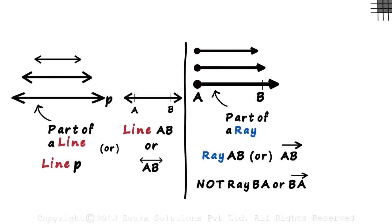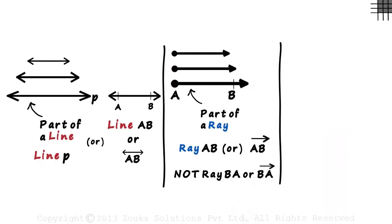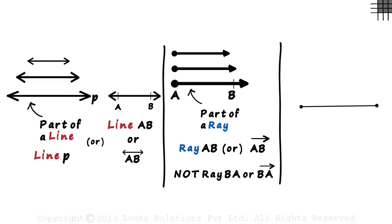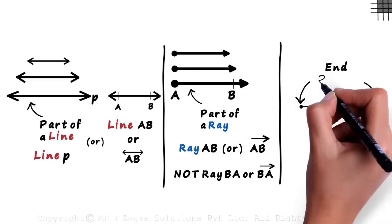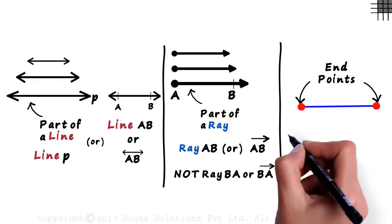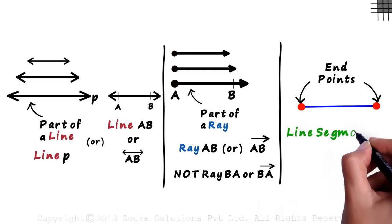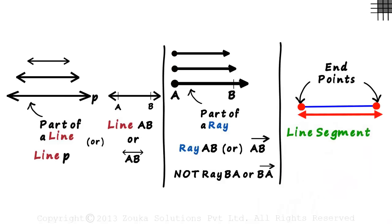Now let's get to the final concept in this video. Look at what we have drawn here. We can see that it has two end points. This is called a line segment and it is a fixed part of a line. This is its specified length and it does not extend indefinitely in any direction.